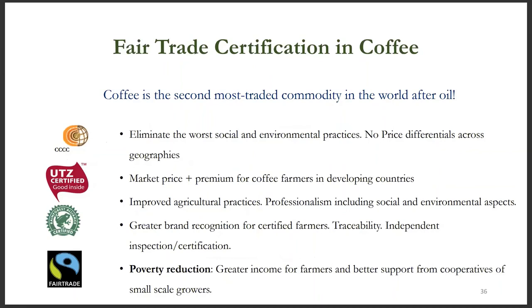Coffee is the second most traded commodity in the world after oil, and Fair Trade provides many benefits for coffee farmers in developing countries. It eliminates poor social and environmental practices in coffee farming. It guarantees a minimum income for coffee farmers by protecting prices from being eroded through competition. Farmers receive a Fair Trade premium on their prices, which is invested in building their capabilities. This leads to improved agricultural practices, greater professionalism in coffee farming and trade, and greater brand recognition for certified farmers. Ultimately, this contributes to poverty reduction, as the income of small-scale farmers will be greater and they will receive better support from corporations.